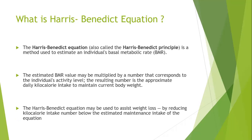The Harris-Benedict equation, also called the Harris-Benedict principle, is the method used to estimate an individual's basal metabolic rate (BMR). The estimated BMR value may be multiplied by a number corresponding to the individual's activity level; the resulting number is the approximate daily calorie intake to maintain current body weight. This equation may assist weight loss by reducing kilocalorie intake below the estimated maintenance value. It is applicable to outpatients and non-communicable disease patients, but not advisable for critically ill patients.